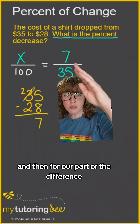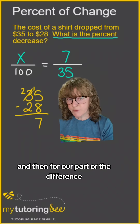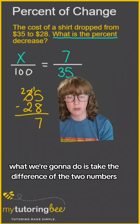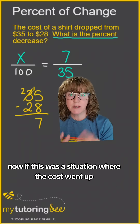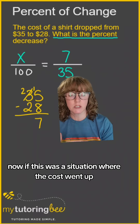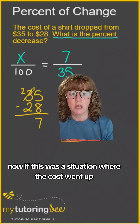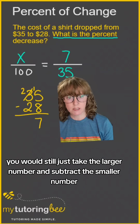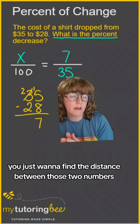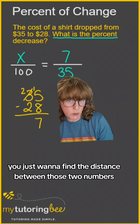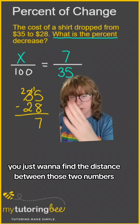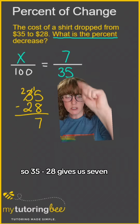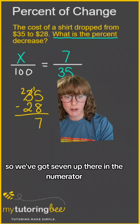For the numerator — the difference — we take the difference of the two numbers. Whether the cost went up or down, you just take the larger number and subtract the smaller to find the distance between them. So 35 minus 28 gives us 7, and we put 7 in the numerator.